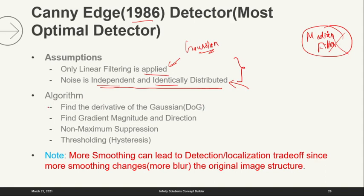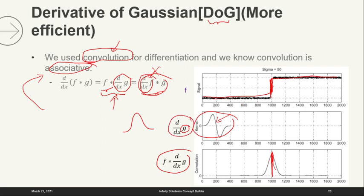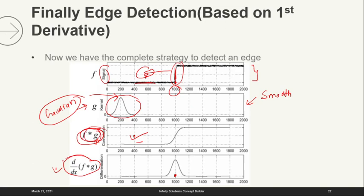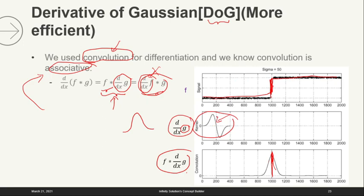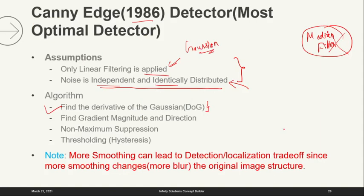The algorithm says: firstly, find the derivative of the Gaussian, because it saves operations. Let me recall — here, first we take the derivative of the Gaussian and then convolve, rather than first convolving and then taking the derivative of the entire thing. It saves one operation: three operations instead of four. So firstly Canny does, in step one, find the derivative of Gaussian (DoG), then find the gradient.